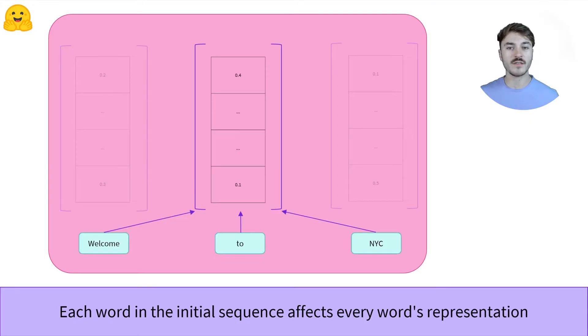These representations contain the value of a word but contextualized. For example, the vector attributed to the word to isn't the representation of only the to word. It also takes into account the words around it, which we call the context.